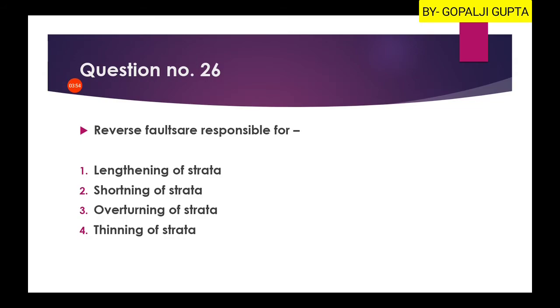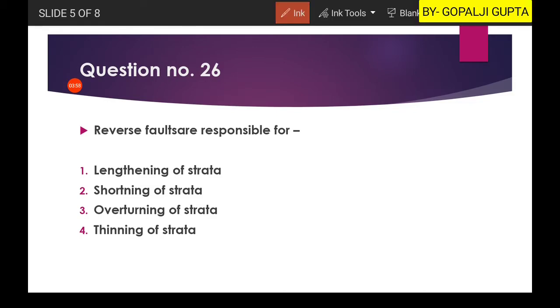Next question: the reverse faults are responsible for? You know that there are mainly three types of faults. One is normal fault, other is reverse fault, and finally the third is strike slip fault. You know that strike slip fault will neither shorten the strata nor lengthen the strata. But if you look at normal fault, this is a block going under normal faulting. So it will increase the length.